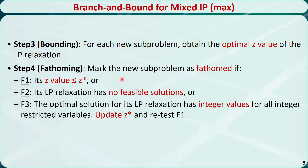Step 4 is called fathoming. Mark the new subproblem as fathomed if at least one of the following three tests is true. Test 1: its z value is less than or equal to z*. Test 2: its linear programming relaxation has no feasible solutions. Test 3: the optimal solution to its linear programming relaxation has integer values for all integer-restricted variables. If test 3 is true, we need to also update z* and retest test 1.